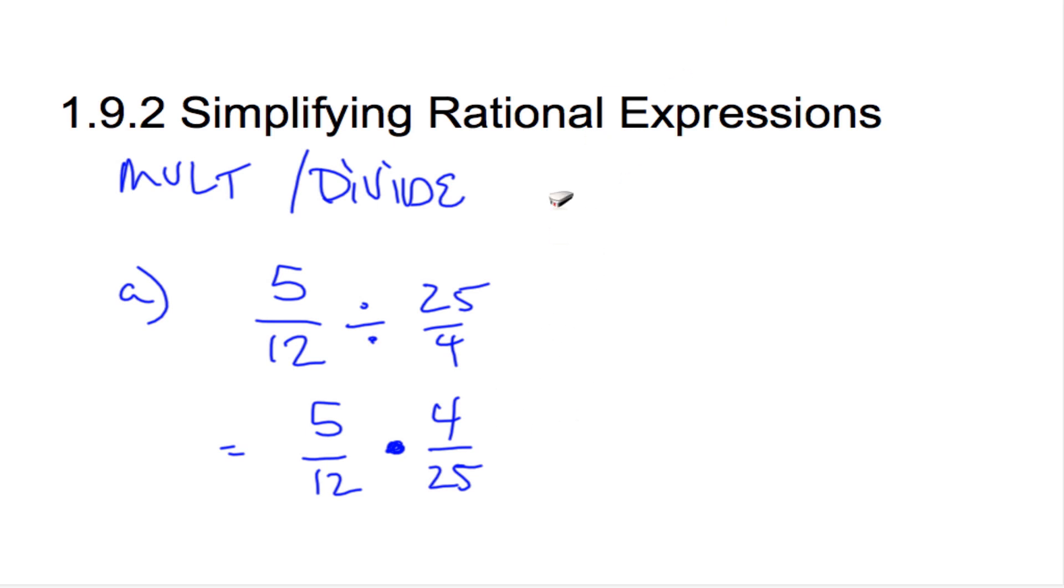Now, if I think about these, what can I do with this step here? Well, essentially what we can do is we can simplify one from the top and one from the bottom. So if I look at these two, 4 goes into 12 three times. 4 goes into 4 once. Because 4 over 12 is the same as 1 third. Similarly, if I look at the 5 and the 25, 5 over 25 is the same as 1 fifth, because 5 goes into 5 one time, and into 25 five times.